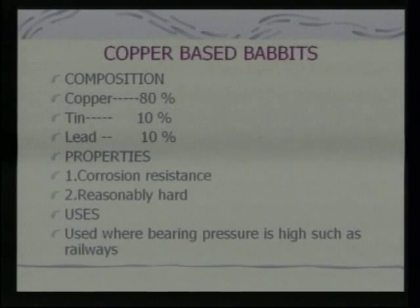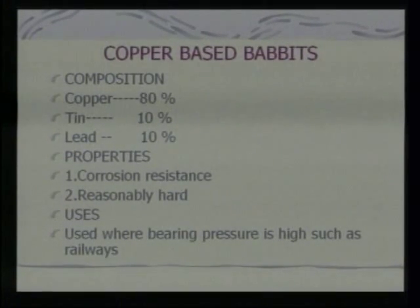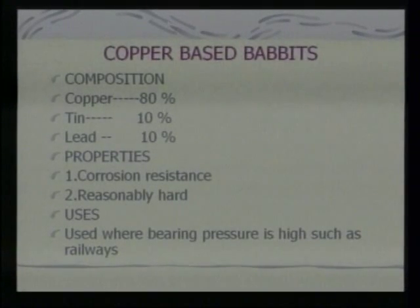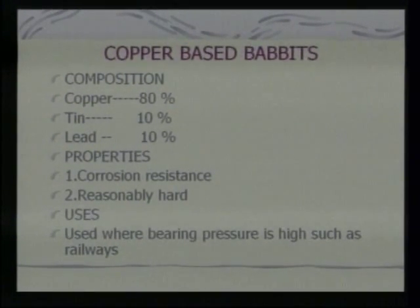Copper-based babbits have composition of copper 80 percent, tin 10 percent, and lead 10 percent. Properties include corrosion resistance and reasonable hardness. They are used where bearing pressure is high, such as in railways.